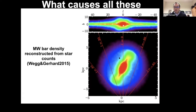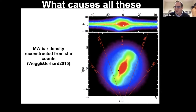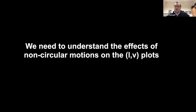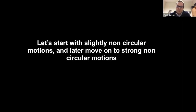Today we interpret most of these features as caused by strong non-circular motion due to the galactic bar. This is just to show how non-axisymmetric the galactic bar is — this is the reconstruction of the Milky Way bar stellar density from red clump star counts, and you see it's pretty big and pretty non-axisymmetric.